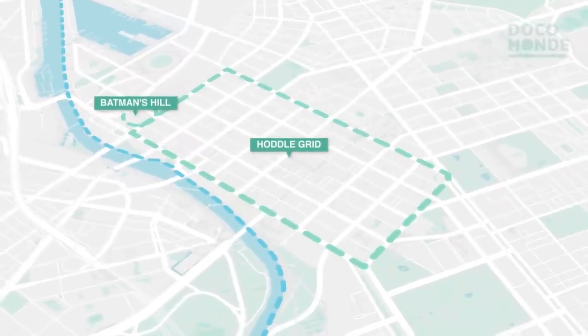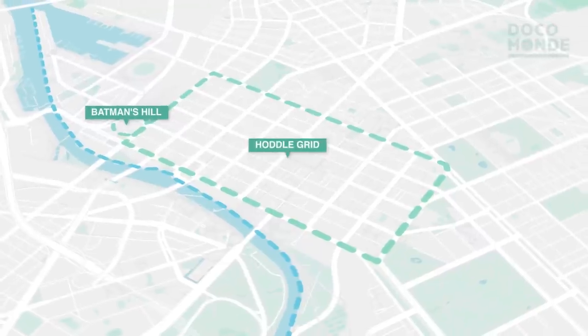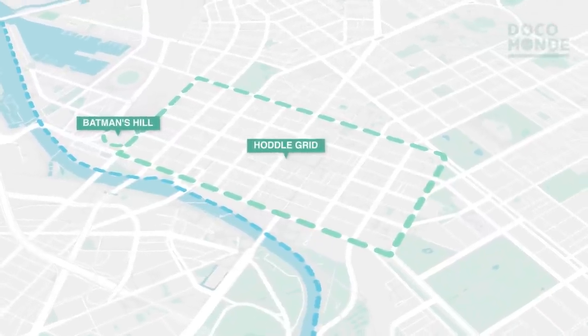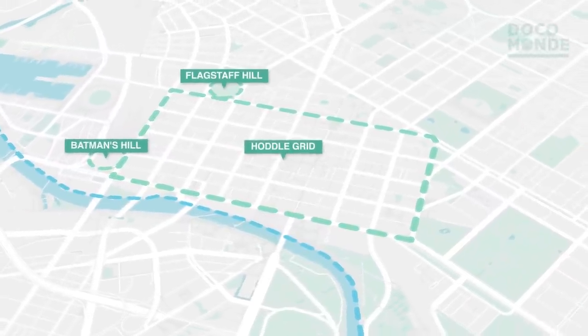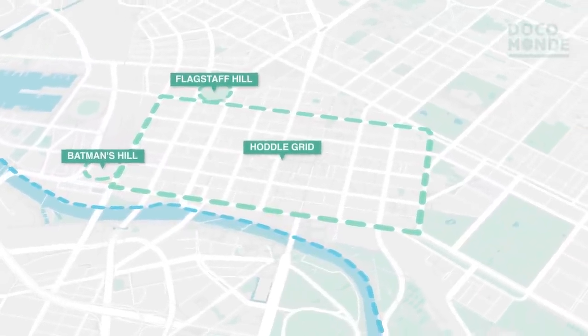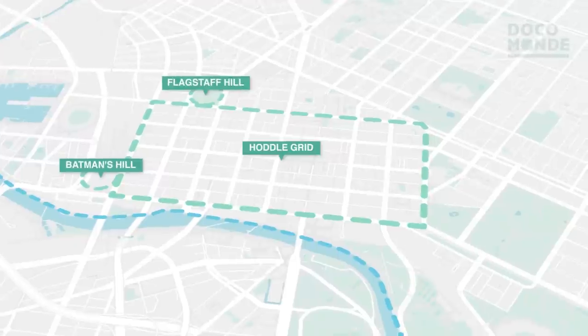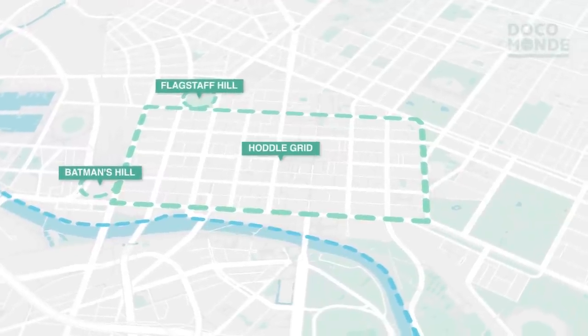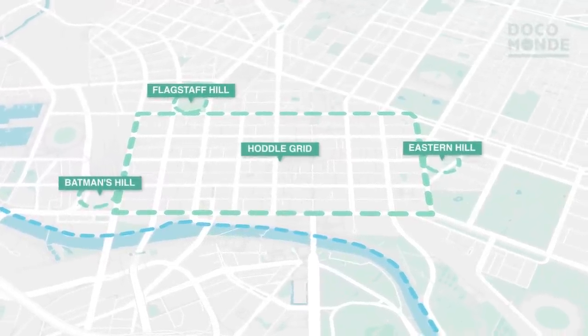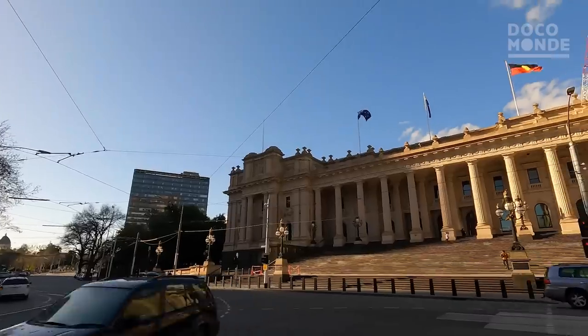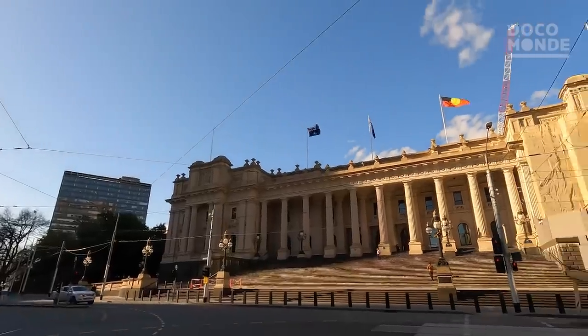Batman's Hill to the west, where settler John Batman took residence; Flagstaff Hill to the north, with its name derived from its use as a flag outpost; and Easton Hill, where today we find the Parliament House of Victoria.